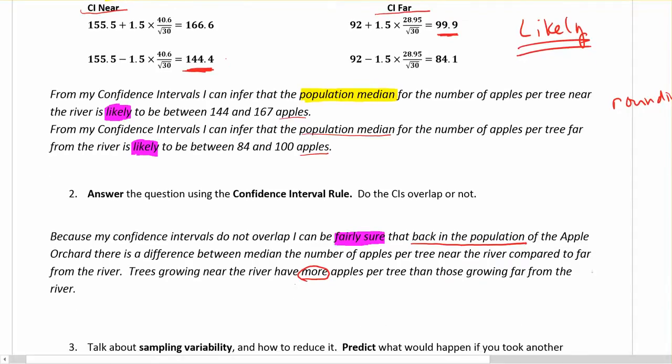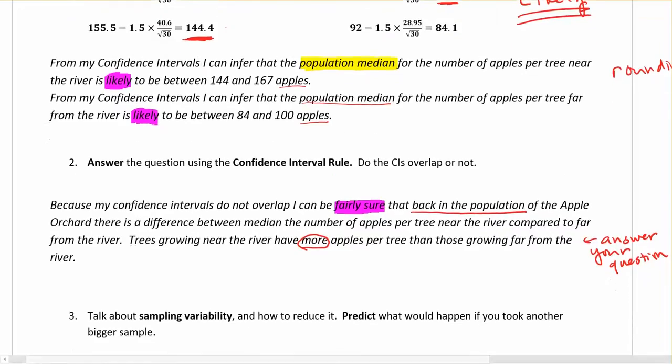In this case make sure you answer your question. Our original question here was do apple trees far from the river actually have more or near the river have more than far from the river? And in fact they do. So we've answered our question, we've made our inference to the population, and we've expressed some uncertainty here. Again we're talking about the medians, which is also hugely important because that was what our question was about.